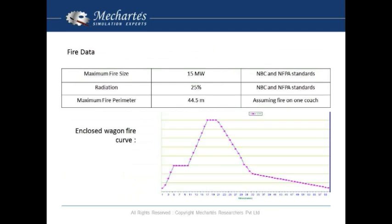For the emergency ventilation system, as per NFPA 130, the design fire was taken from experimental data available through a German paper on enclosed wagon fire curve. It was a 15 megawatt fire peaking, with a flashover at about five minutes, and the peak arrived at around 20 minutes.